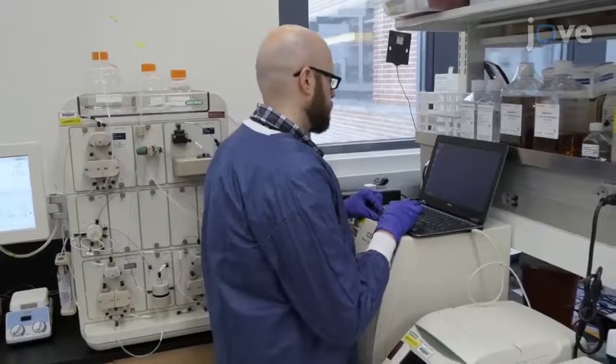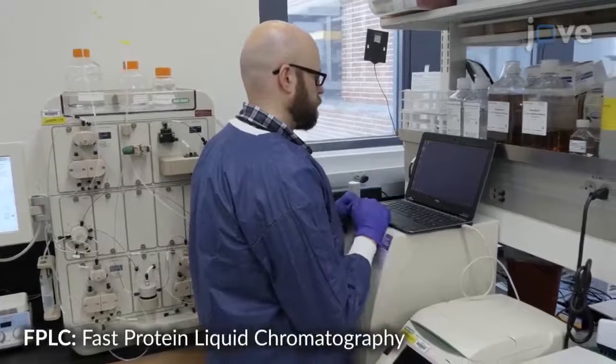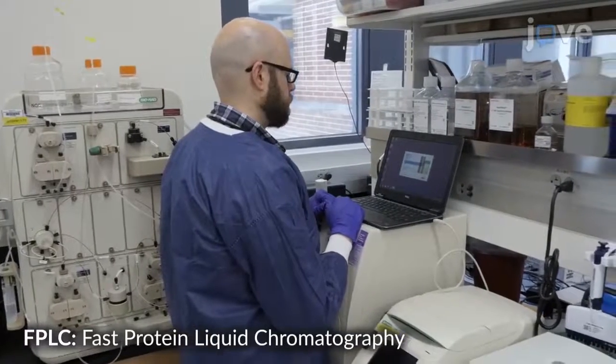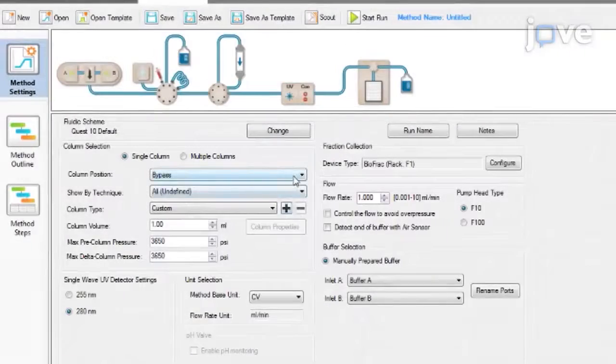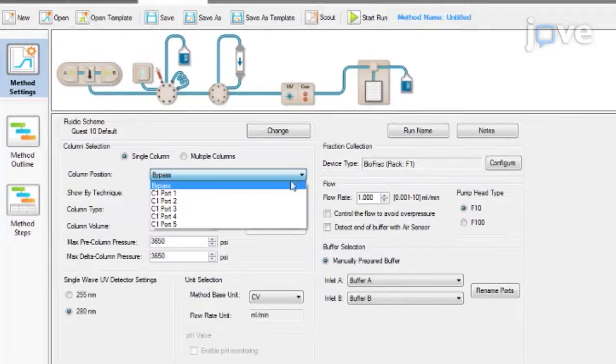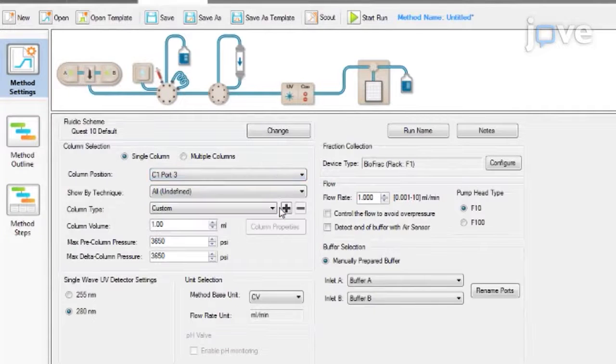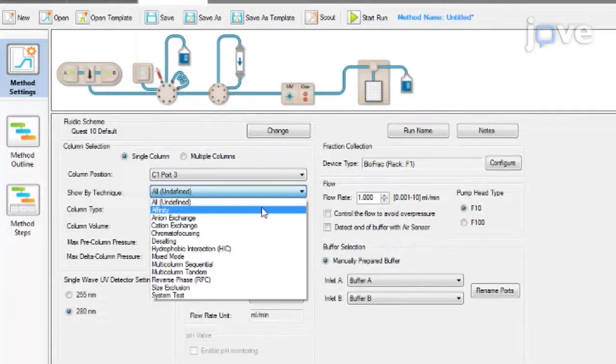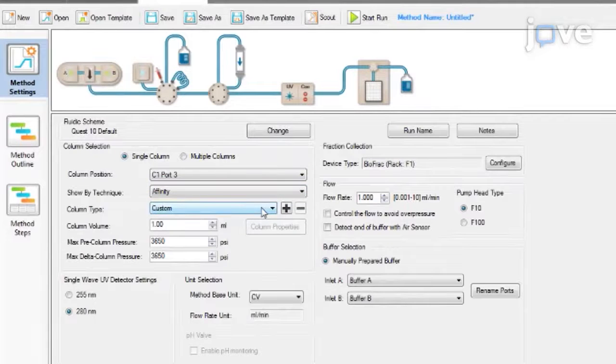To isolate the protein of interest, open the FPLC software and click the New Method option. In the Method Settings menu, open the Column Position drop-down menu and select C1 port 3. In the Shown by Technique drop-down menu, select Affinity.